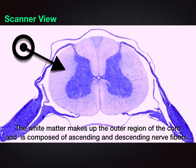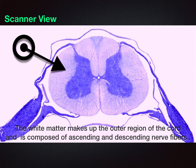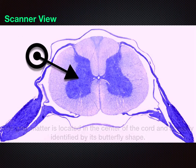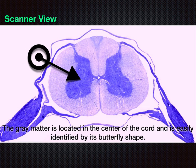On scanner view of the cross-section of the spinal cord, many important features are visible. The white matter makes up the outer region of the cord and is composed of ascending and descending nerve fibers. The gray matter is located in the center of the cord and is easily identified by its butterfly shape. The gray matter contains cell bodies, which we shall view at HPO.